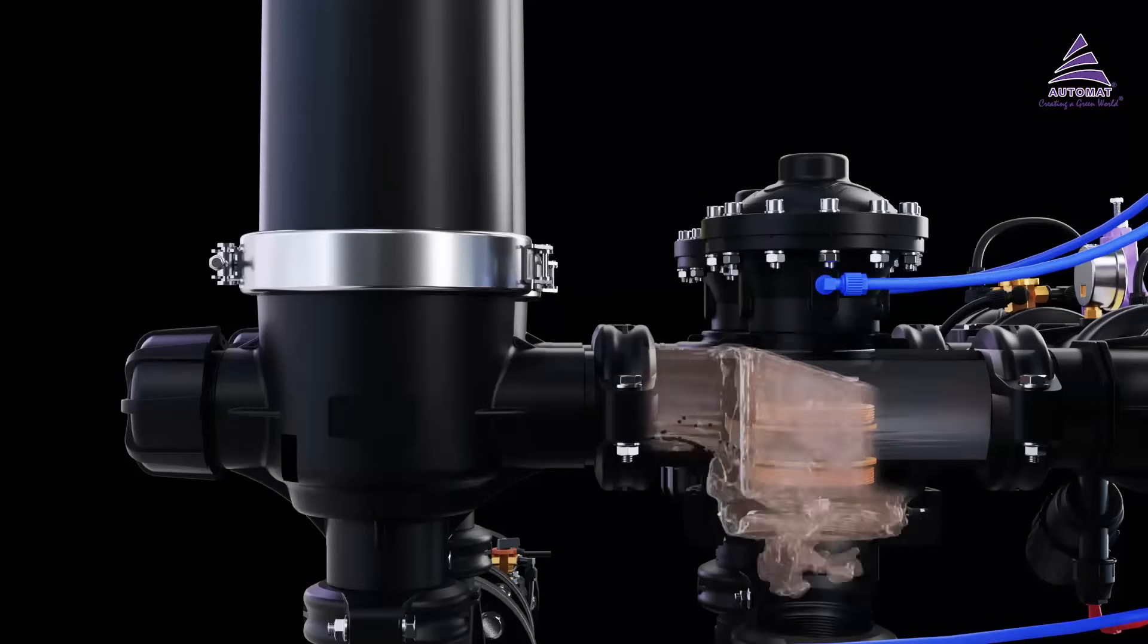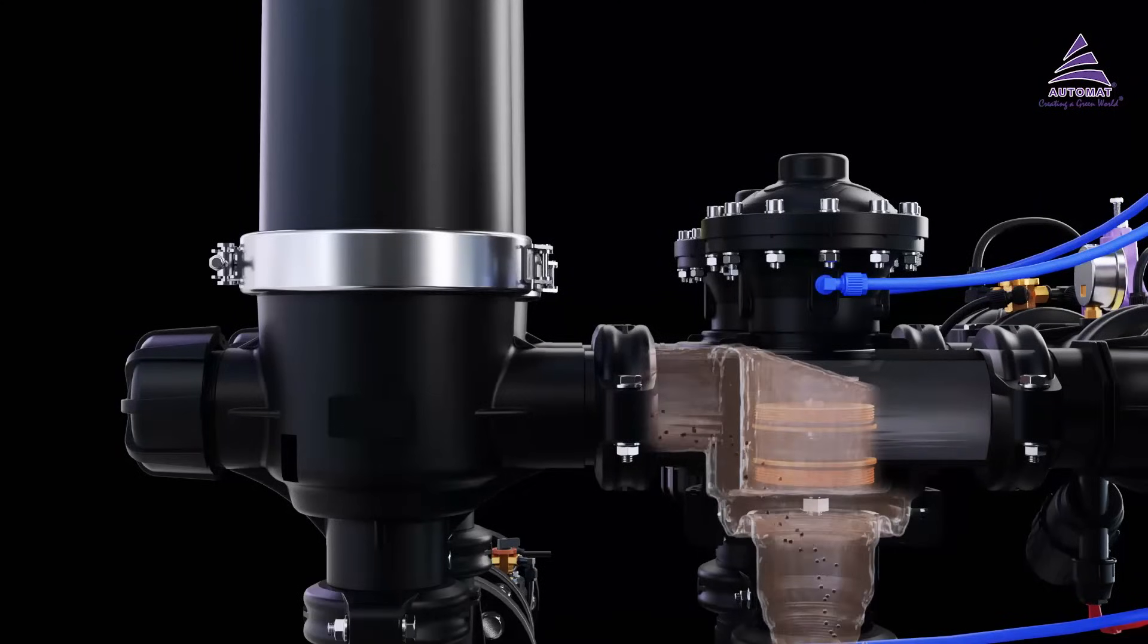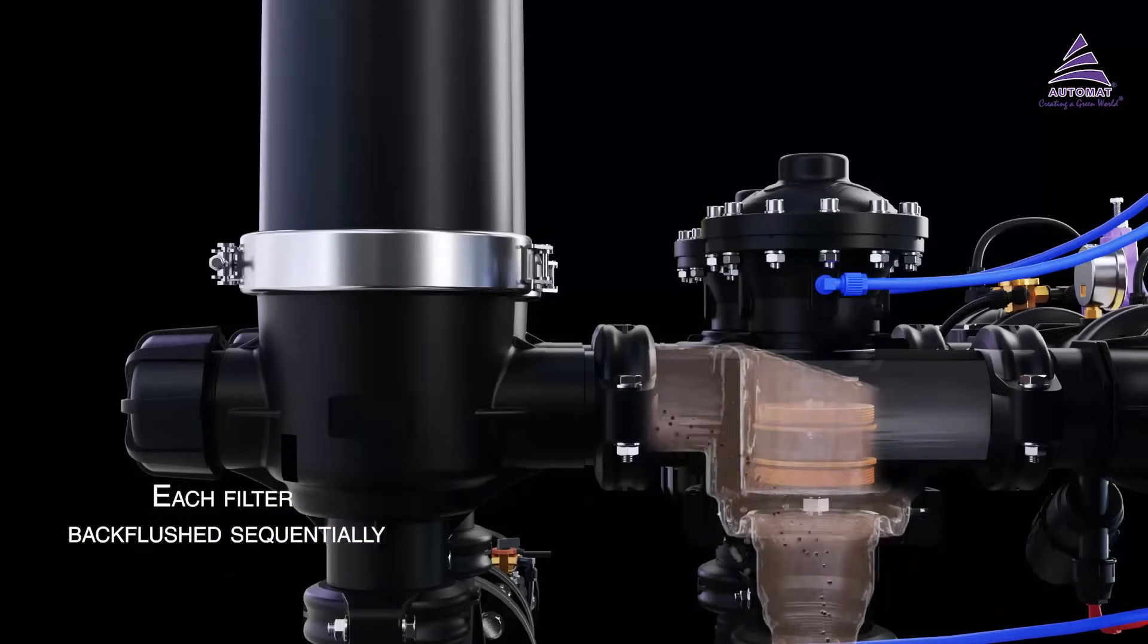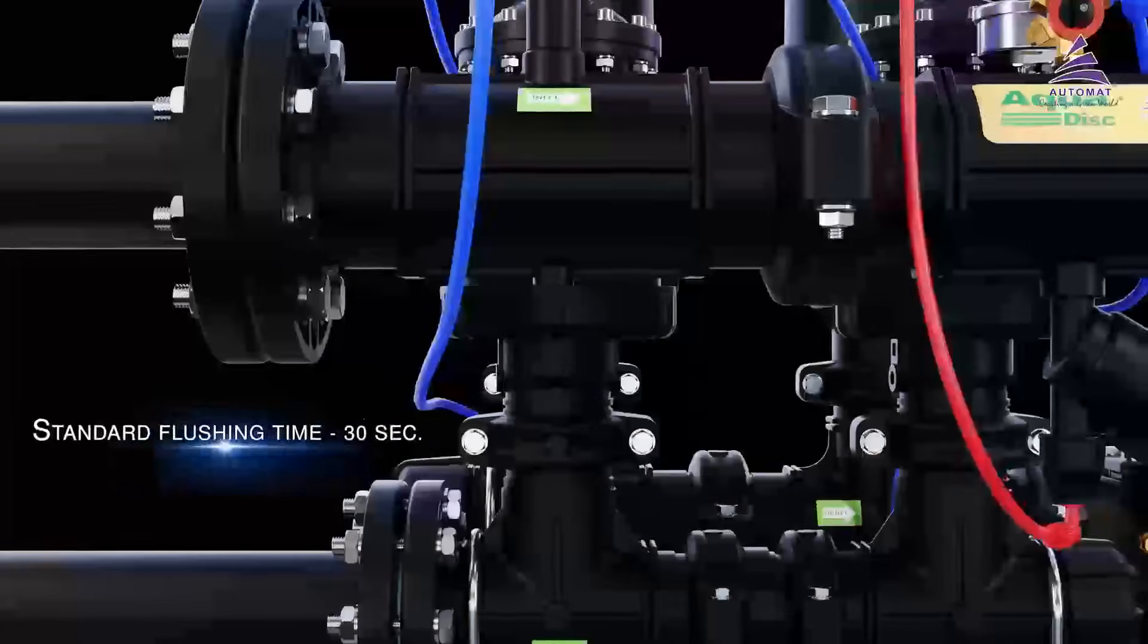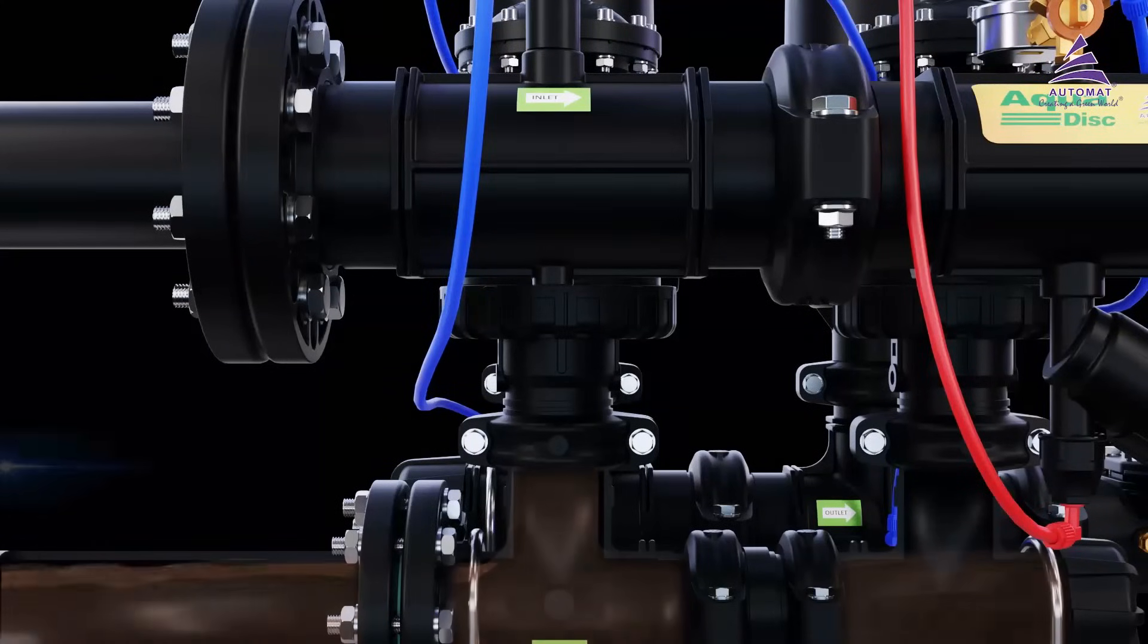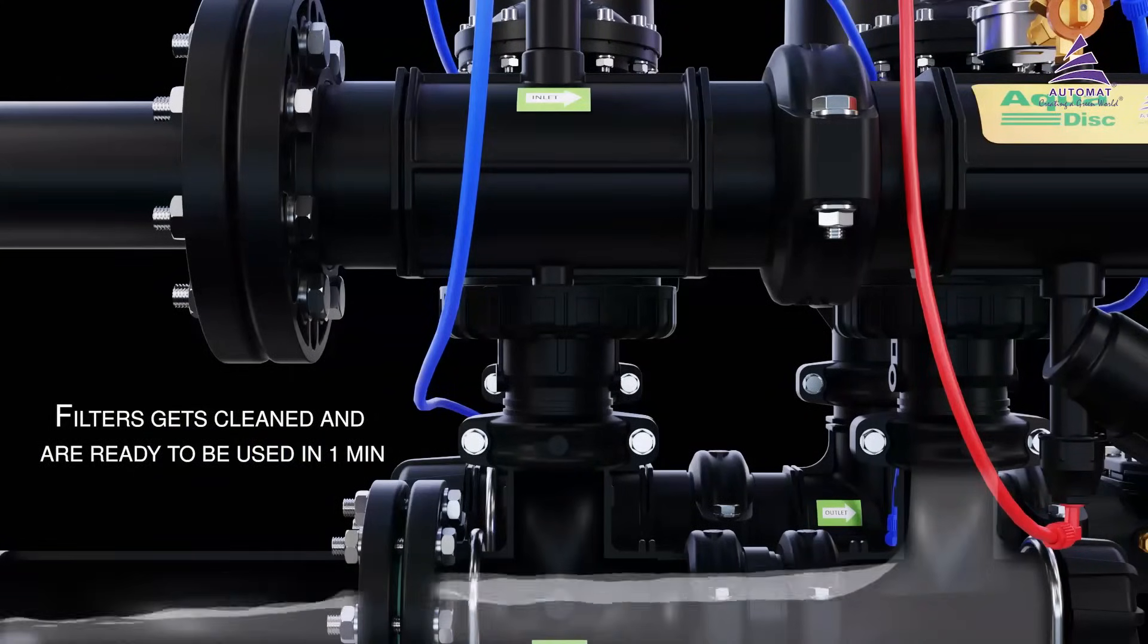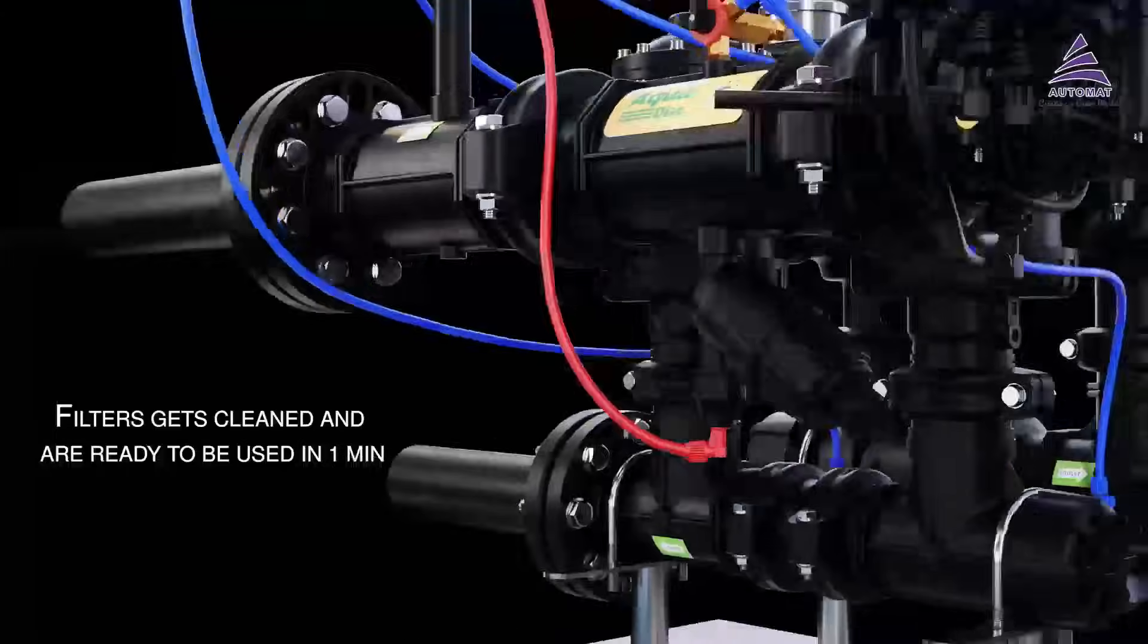This efficiently cleans the disks by forcing out contaminants trapped in the grooves of the disks and then evacuating through the backflush valve. During backflushing process, filters are flushed sequentially. When one filter is being cleaned, the other filters continue to supply filtered water, thereby ensuring uninterrupted supply of clean water for irrigation.